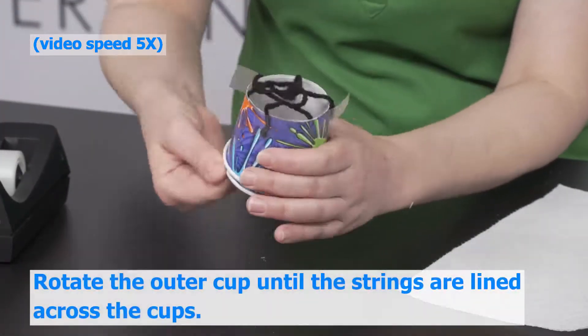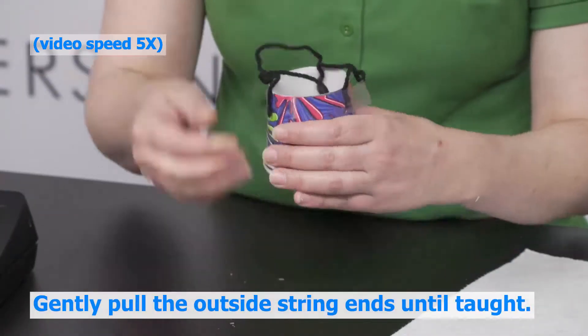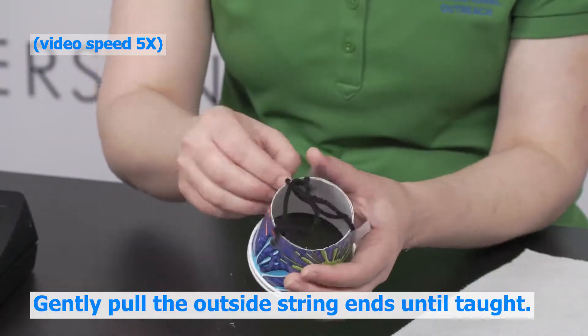Rotate your outer cup until the strings are lined across the top of the cups. Gently pull on the outside ends of the strings so that the intersection becomes taut.